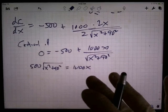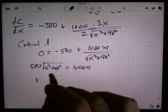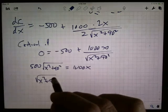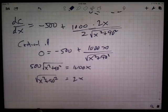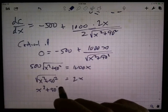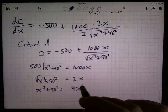I'm going to divide both sides by 500. Before I do anything else, I've got the square root of X squared plus 90 squared, squared, equals 2X. Squaring both sides, I've got X squared plus 90 squared equals 4X squared.